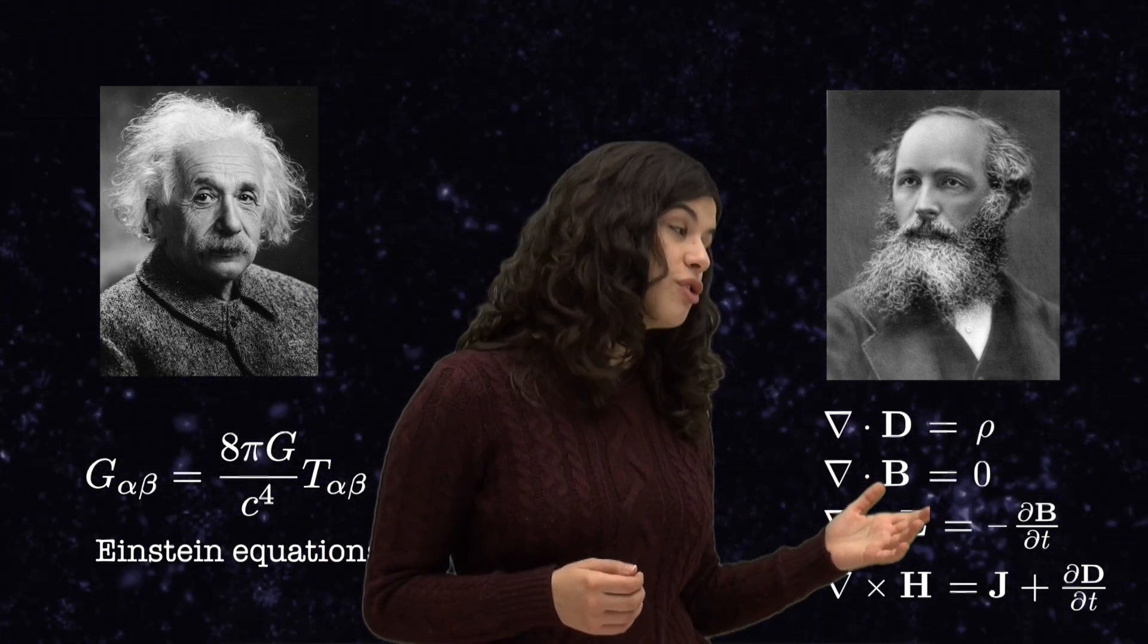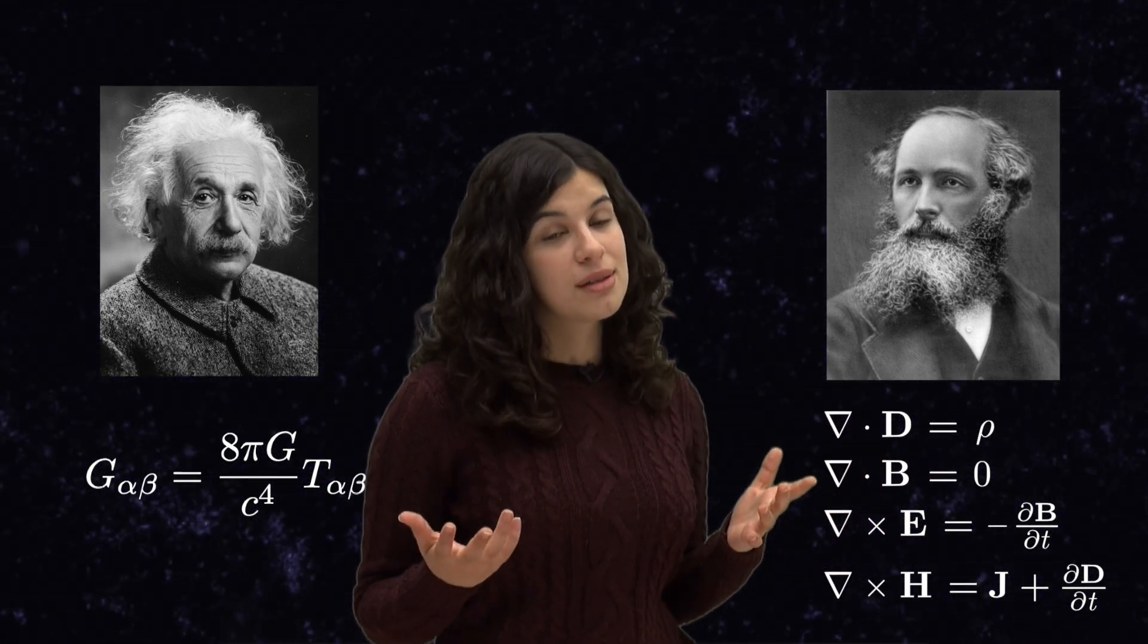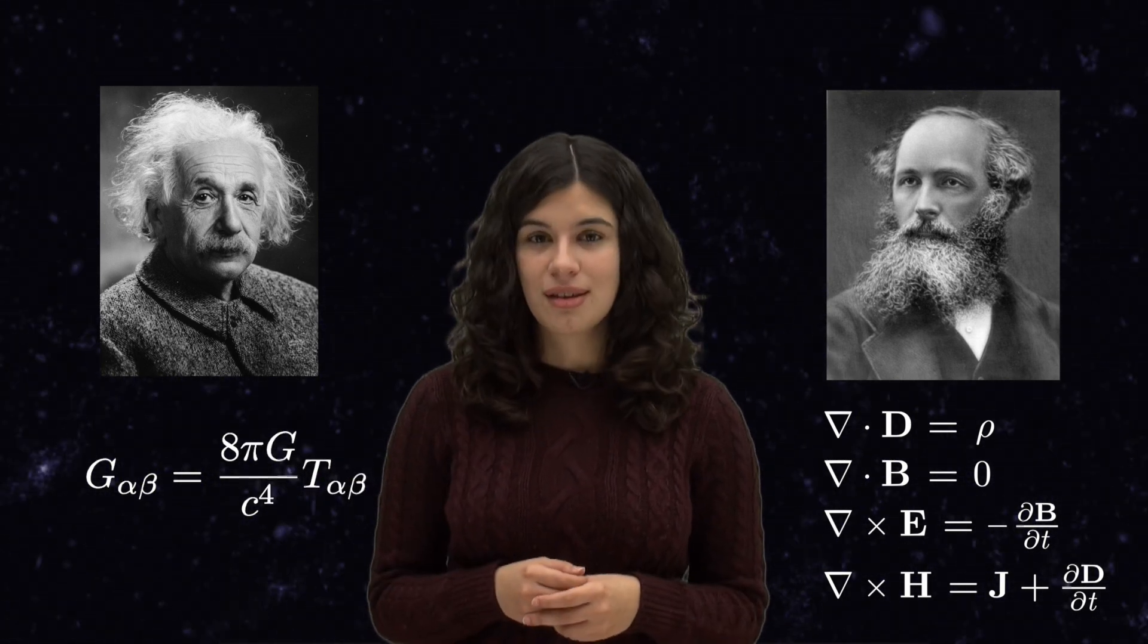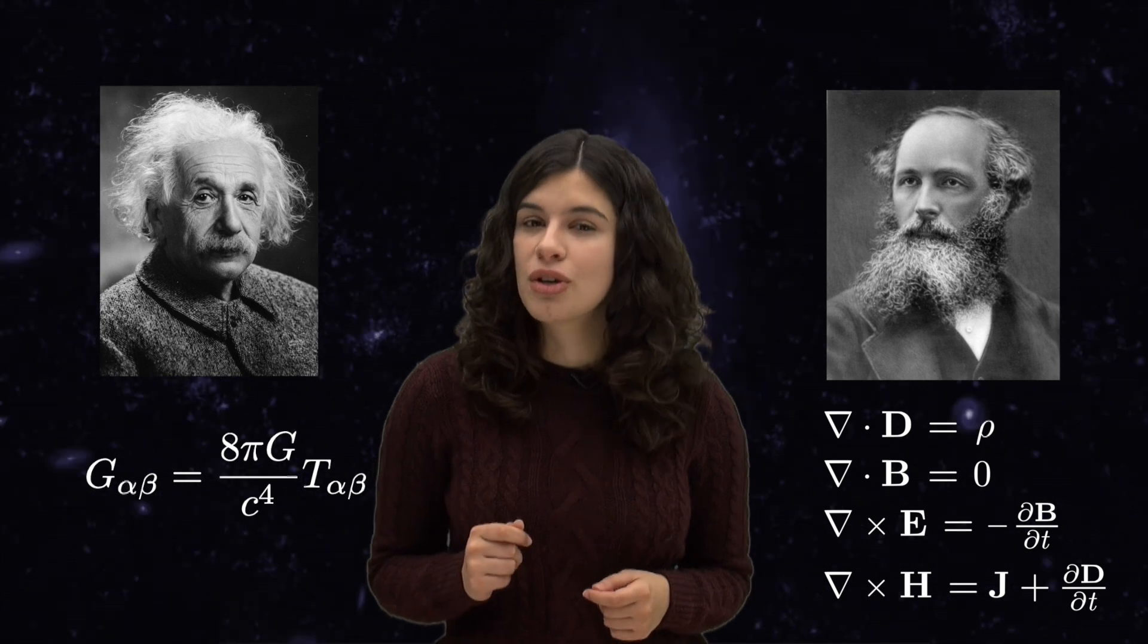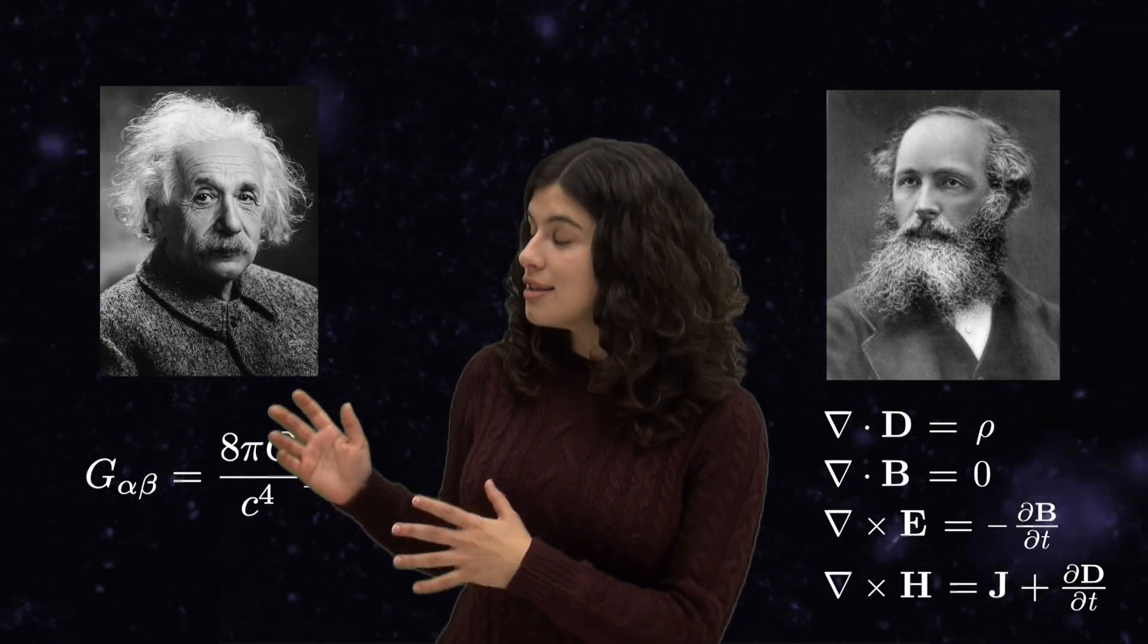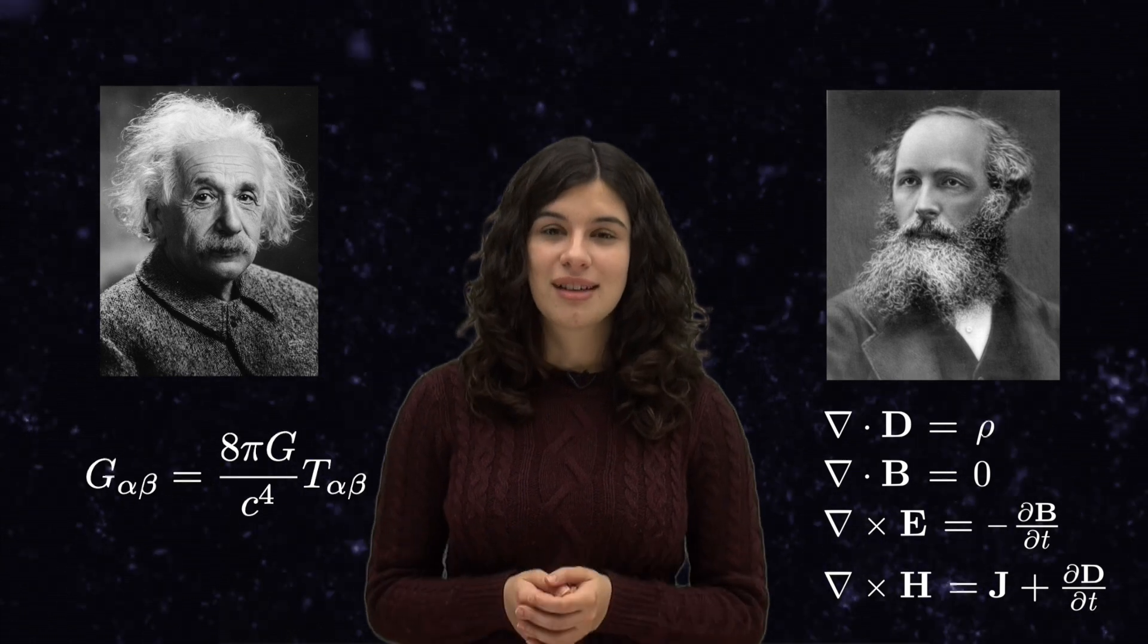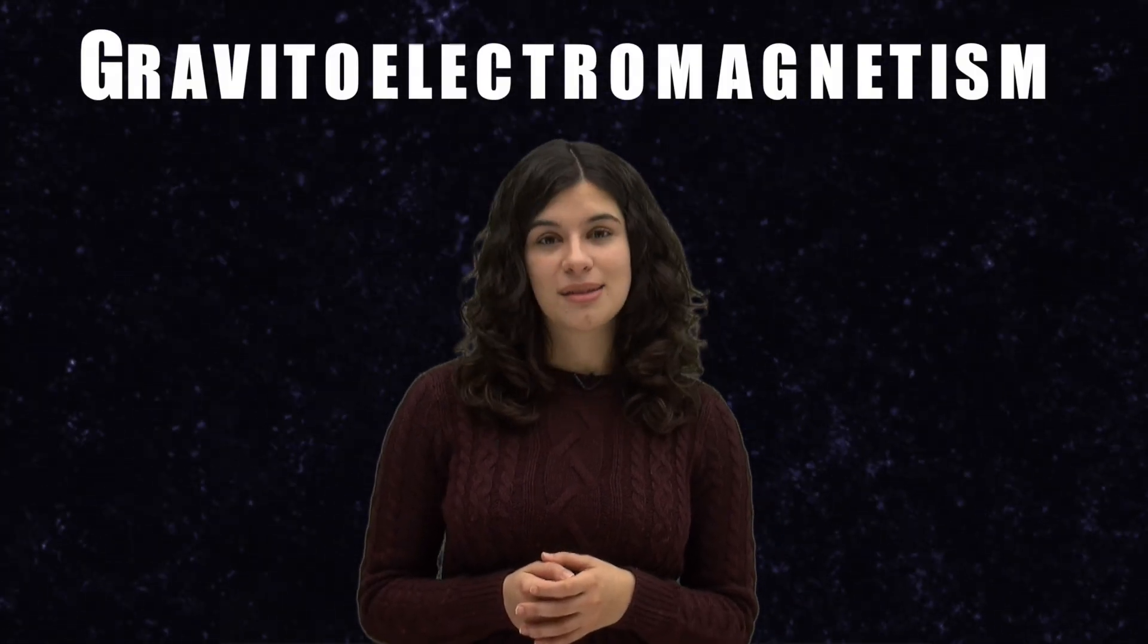But Maxwell's equations, which are the basis for electromagnetism, are more familiar to us and much easier to solve than the Einstein equations. Under some approximations, we may actually write the Einstein field equations in a form strikingly similar to Maxwell's equations. This is called gravitoelectromagnetism.